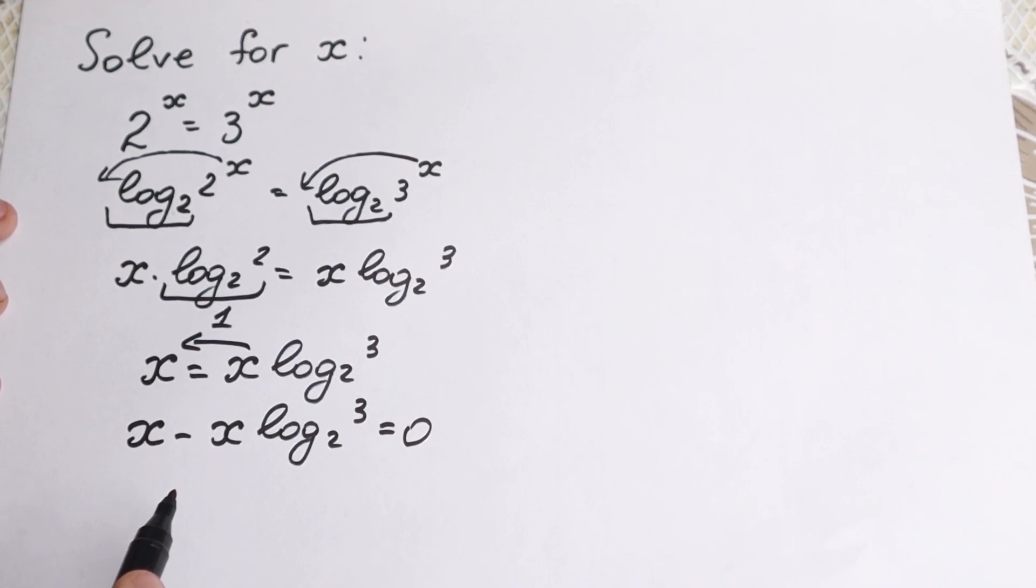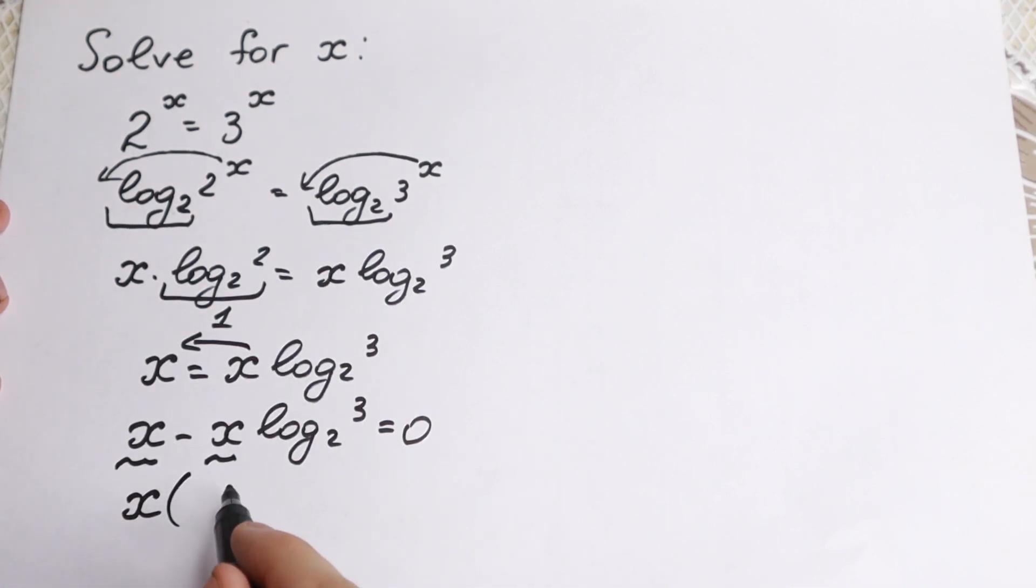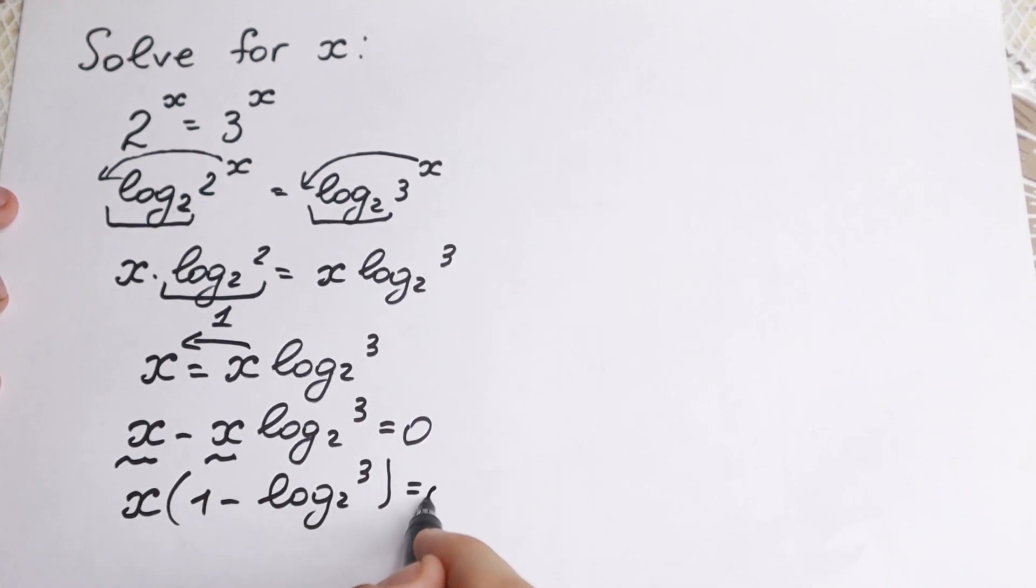If we look closely to this, we have x and we have x, so we can easily factor this x. We have x, and in parentheses what we have: right here 1, and right here minus this log, so log 3 base of 2 equal to 0.